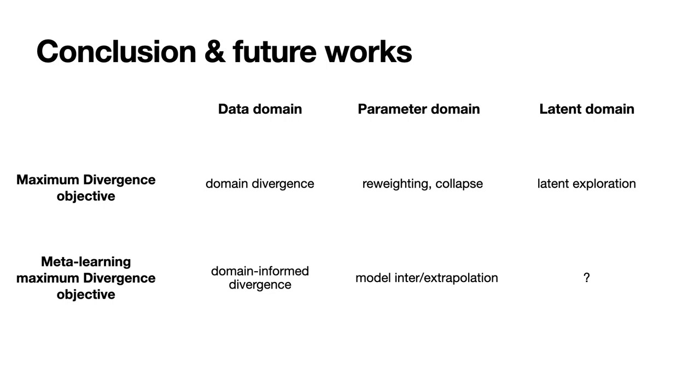To summarize, we propose two different objectives that can be applied in the data, parameter, or latent domain to obtain generations that deviate from the original data distribution. Furthermore, these objectives can be combined to have a finer definition of the desired outcomes. Of course, this work is still prospective, such that the next step will be to apply these different criteria and evaluate their results in co-creative setups.